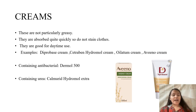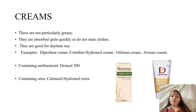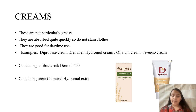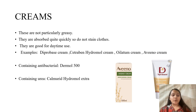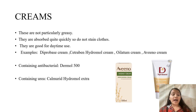First up, we have creams. Creams are absorbed very quickly and therefore do not stain clothes. They are useful both day and night but are particularly beneficial during the daytime. Examples include Aveeno cream, Diprobase cream, Hydromol cream, Oil Atum cream, Dermol 500 which has antibacterial properties, and Calmurid Hydromol Extra which contains urea.